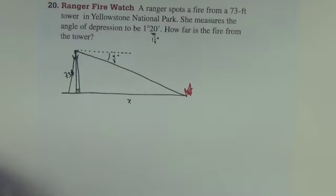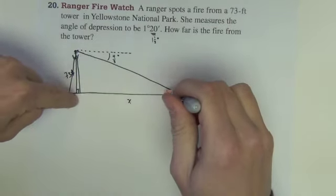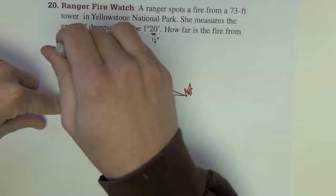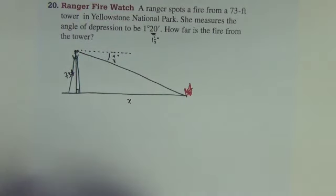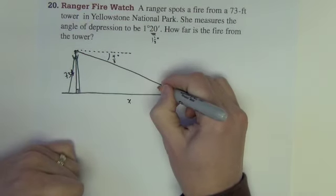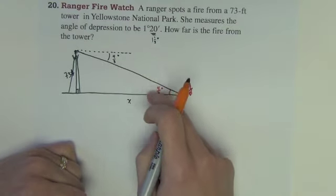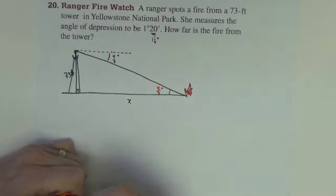A couple ways we could do this. I need an angle inside the triangle that's not the 90. So either you find the difference between 90 and 4 thirds and use that here, or you could use 4 thirds right there. They would be the same. They're alternate interior angles. So geometry tells us those are going to be the same.